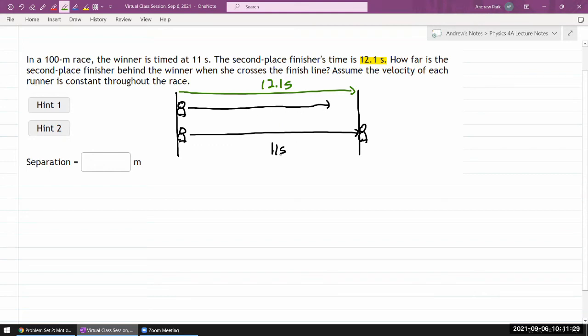But at the time of 11 seconds, I have to figure out where the second place finisher will be at that 11 second mark. The question itself says, assume the velocity of each runner is constant throughout the race. That makes things a lot easier.